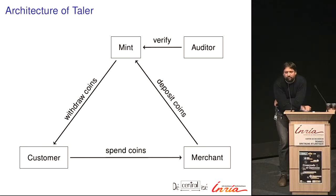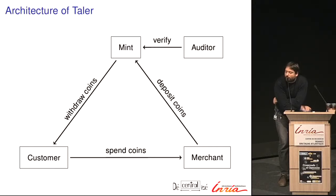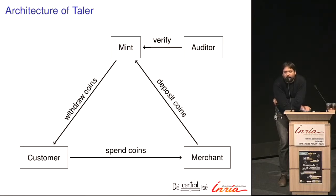The coins become anonymous at the withdrawal stage. The customer can then transfer coins to a merchant by signing with the coin — effectively saying 'this merchant should receive these five euros.' The merchant goes back to the mint to deposit the coins and redeem their value via whatever means are available. Meanwhile the mint holds the reserve currency. The customer had transferred 50 euros to the mint, and now the mint transfers some to the merchant. We also have an auditor who can cryptographically check that the mint's operations are correct.